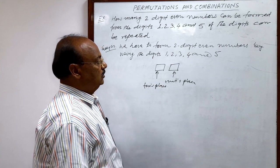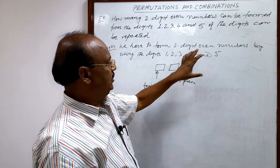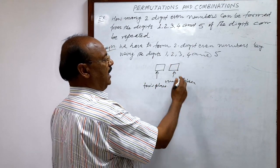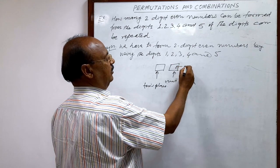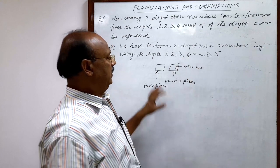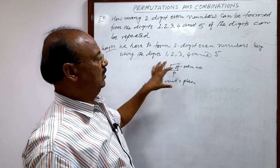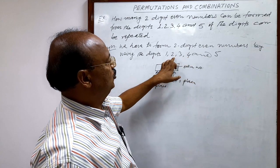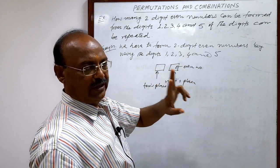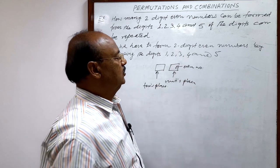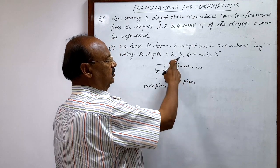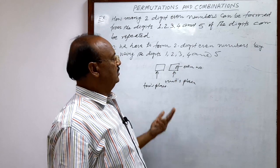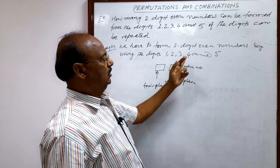Since the two-digit number should be even, the digit at units place should always be an even number — then only this two-digit number will become even. How many even numbers do we have here? 2 and 4 — only two digits which are even. So we have 2 options for the units place: either 2 or 4.